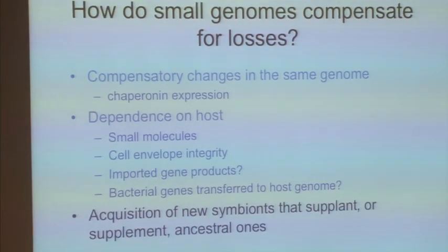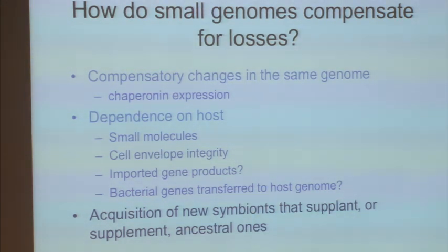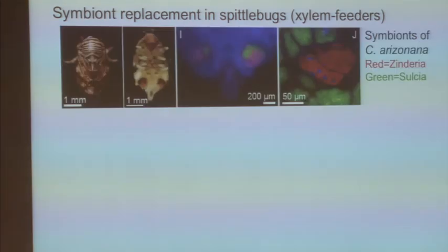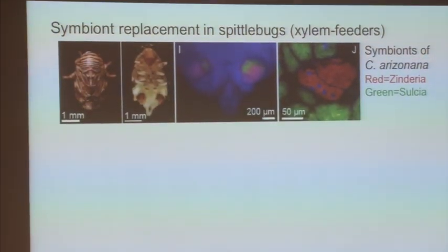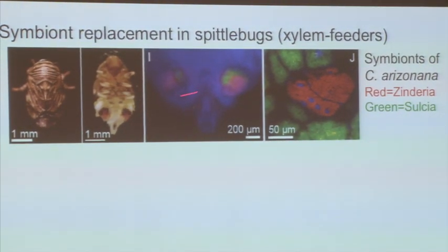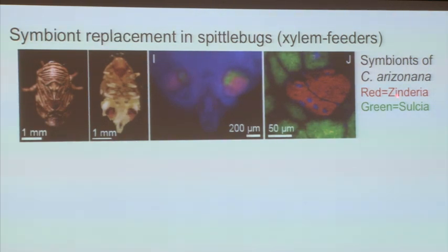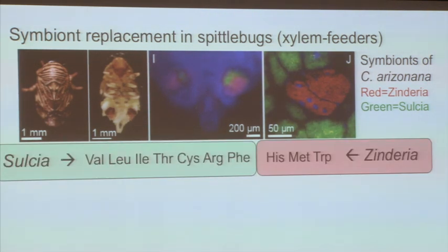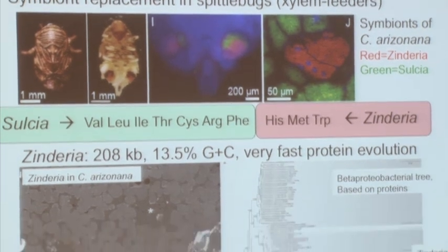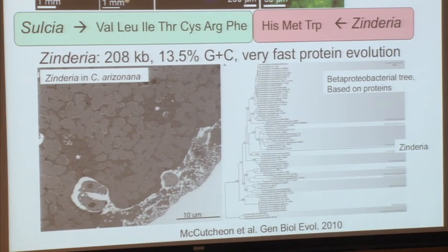Another thing that can happen is acquiring new symbionts to supplement the ancestral ones you're dependent on. One case we recently looked at is in spittlebugs — xylem feeders. In the Auchenorrhyncha they have two symbionts: green in these pictures are Sulcia, red is Zinderia, a beta proteobacterium. Sulcia is making seven amino acids and Zinderia is making three. The Zinderia cells look really extreme — 13.5% GC content, which is insane — and on a protein-based tree it shows crazy fast evolution; the cells look really decrepit and amorphous. But it's present in most spittlebugs.